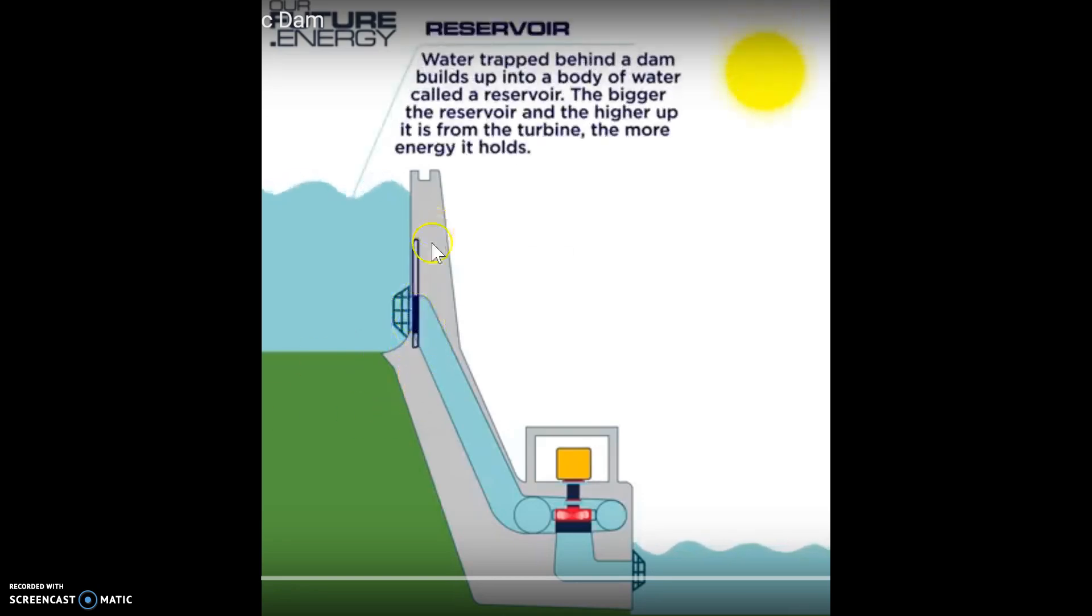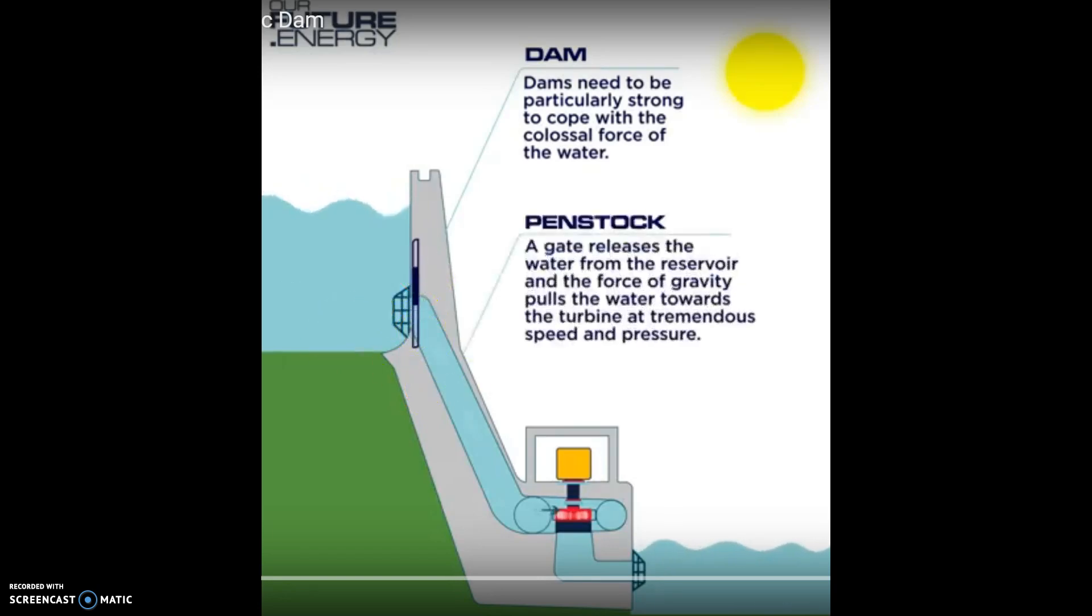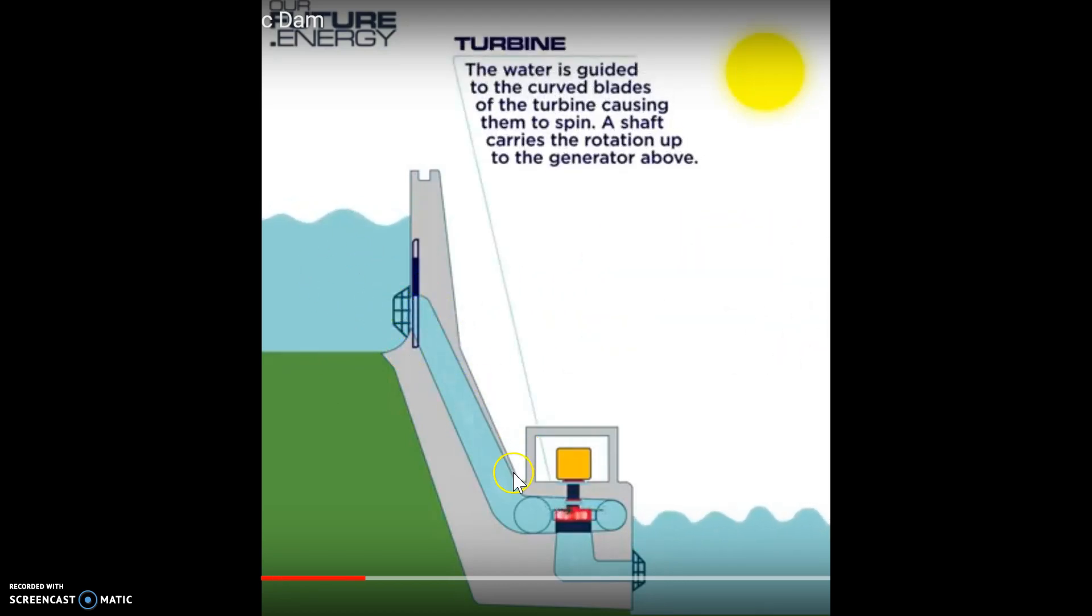There's a gate here, and the water is held back by this dam. We open the gate, and water rushes down. When the water rushes down, the potential energy due to its height converts into kinetic energy, which is speed.